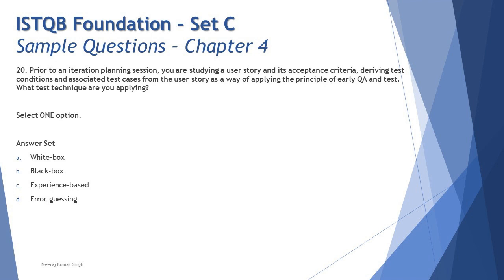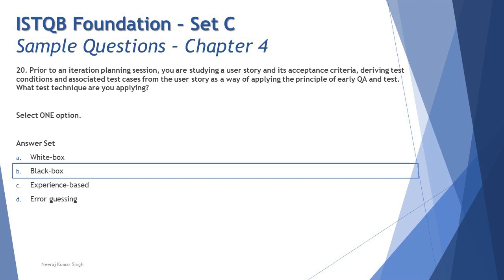The question is about categorization and the basis used to apply a technique. They're telling you we are understanding requirements, reviewing acceptance criteria, and deriving test cases from them. Which category uses requirements as a test basis? Black box test techniques use requirements as a test basis to derive test cases. White box testing is applicable when you have access to code. Experience-based techniques are applied when you don't have formal requirements or code but have past experience. So the right answer is B — black box testing techniques.